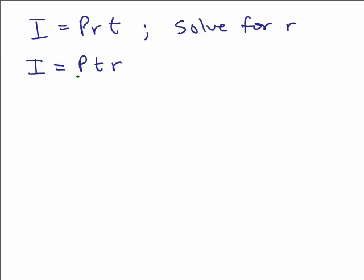So it might be easier to think of this as P, T, r. So you sort of are thinking of this as the coefficient of r, similar to if you had something like this, 5 = 7r, right? Except instead of a 7, it's a P, T.